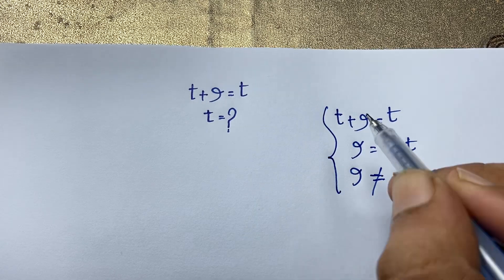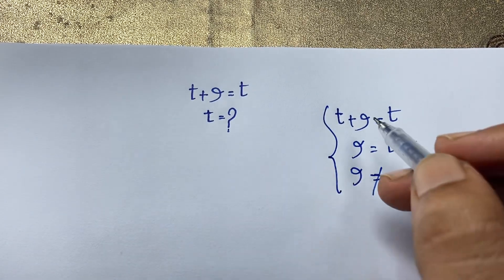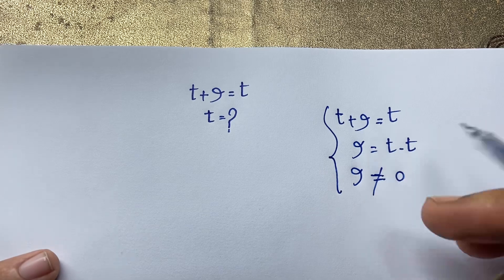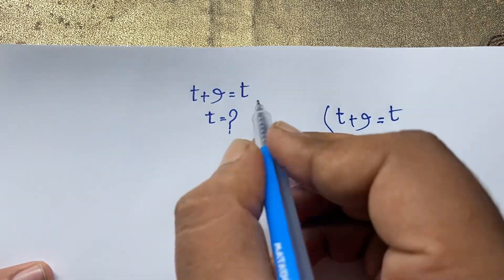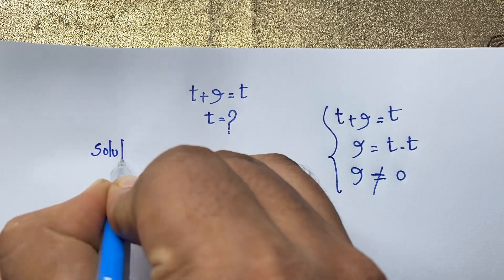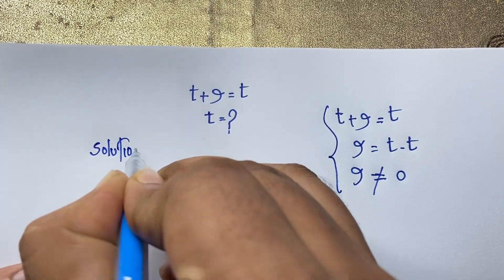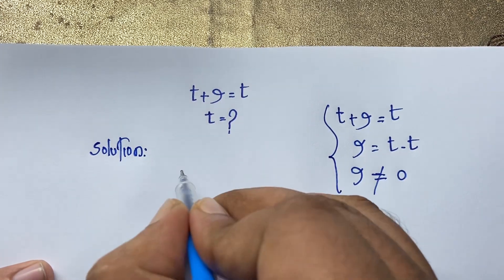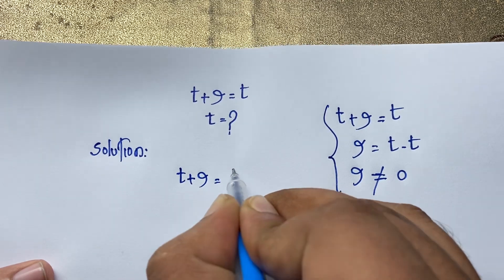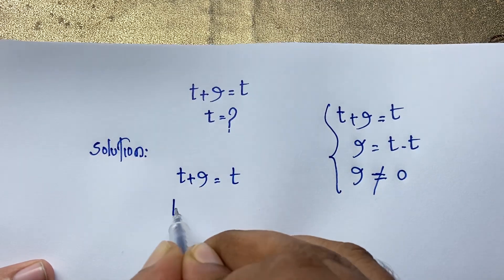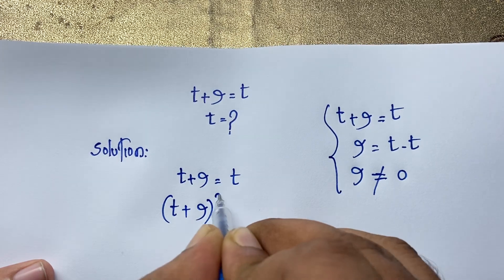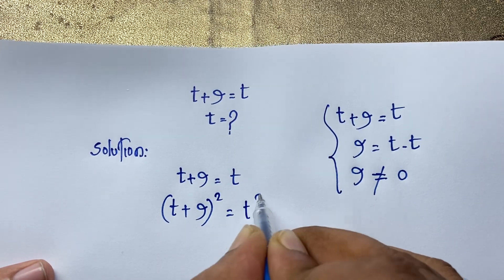But how to solve this interesting math question more completely? If you want to solve it, I will use squaring both sides. So: √(t + 9) = t, then squaring both sides gives (t + 9)² = t².